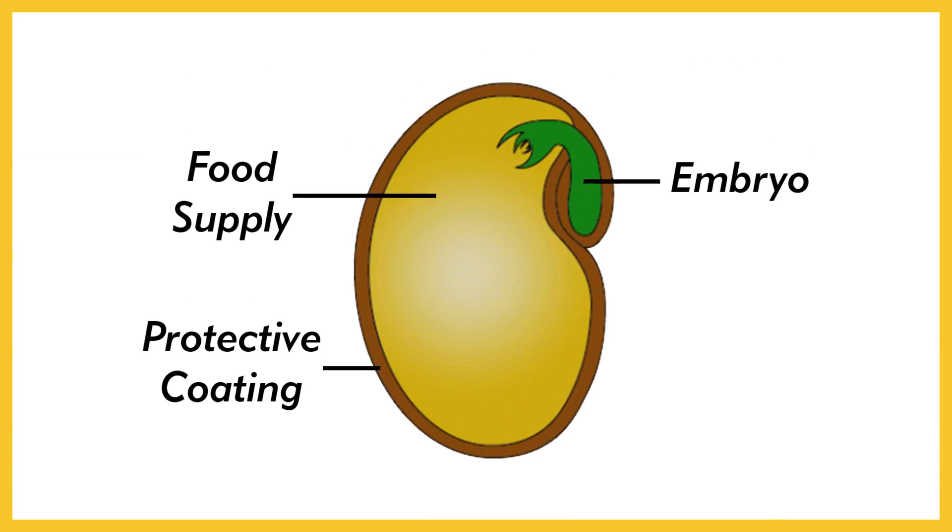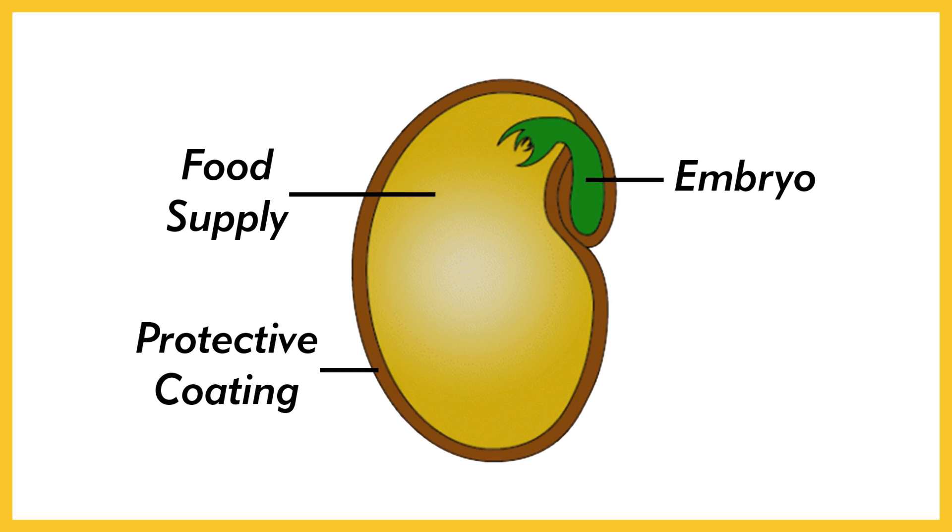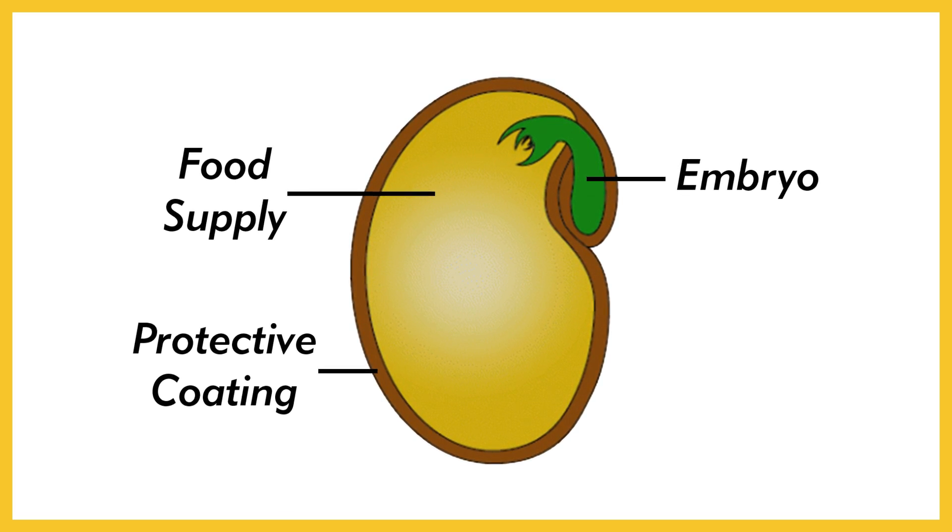Seeds themselves develop after fertilization, and they consist of the embryo, a food supply, and a protective coating. So not only did the evolution of seeds mean less reliance on water, but it meant that seed plant embryos had way more protection, a nicely packed lunch, and the ability to stay dormant for days, months, or even years before emerging.